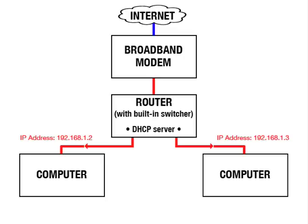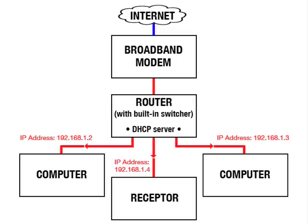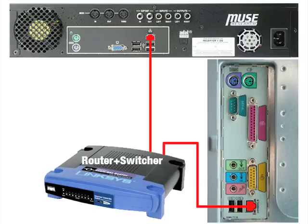So if your network contains a router, you can configure Receptor to get an IP address automatically as provided by the DHCP server in your router. Let's look at how to set up Receptor for this purpose. Some of you may have a router that has a built-in multi-port switcher. If this device has enough Ethernet ports for all your equipment, then you won't need an additional switcher.